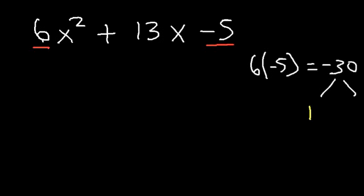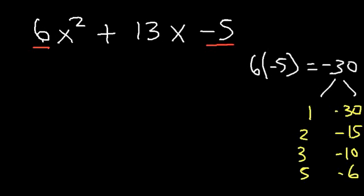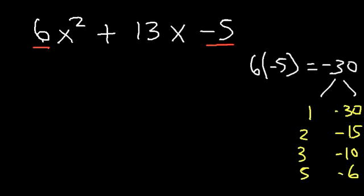Dividing negative 30 by 1 gives negative 30; by 2 gives negative 15; by 3 gives negative 10; by 5 gives negative 6. Notice that 2 and 15 differ by 13. 2 plus negative 15 is negative 13, so if we make it negative 2 and positive 15 it works. Negative 2 times positive 15 is negative 30, and negative 2 plus 15 is positive 13.